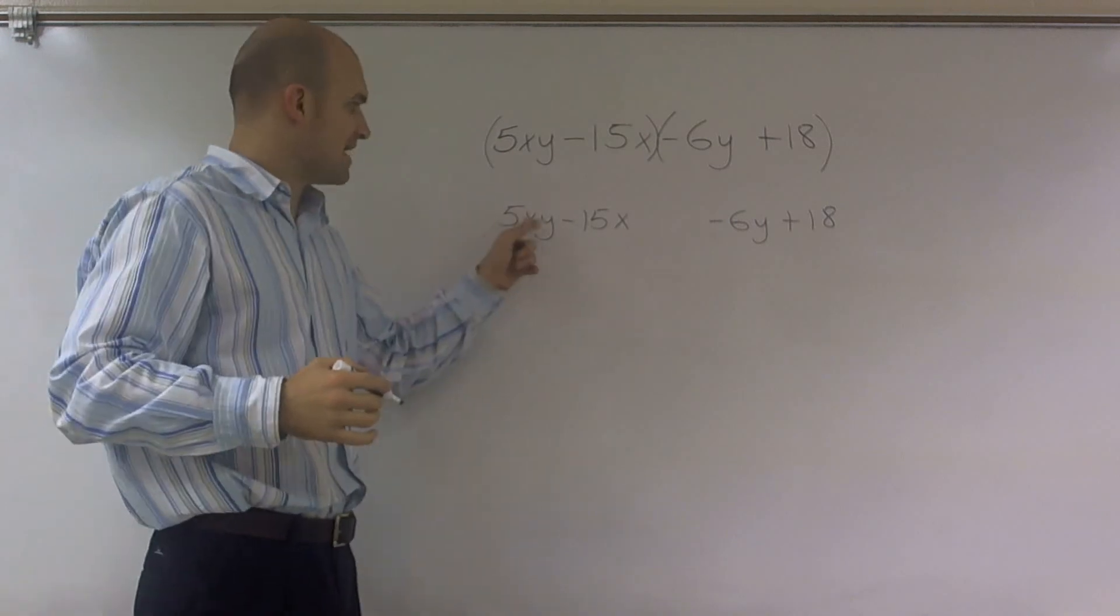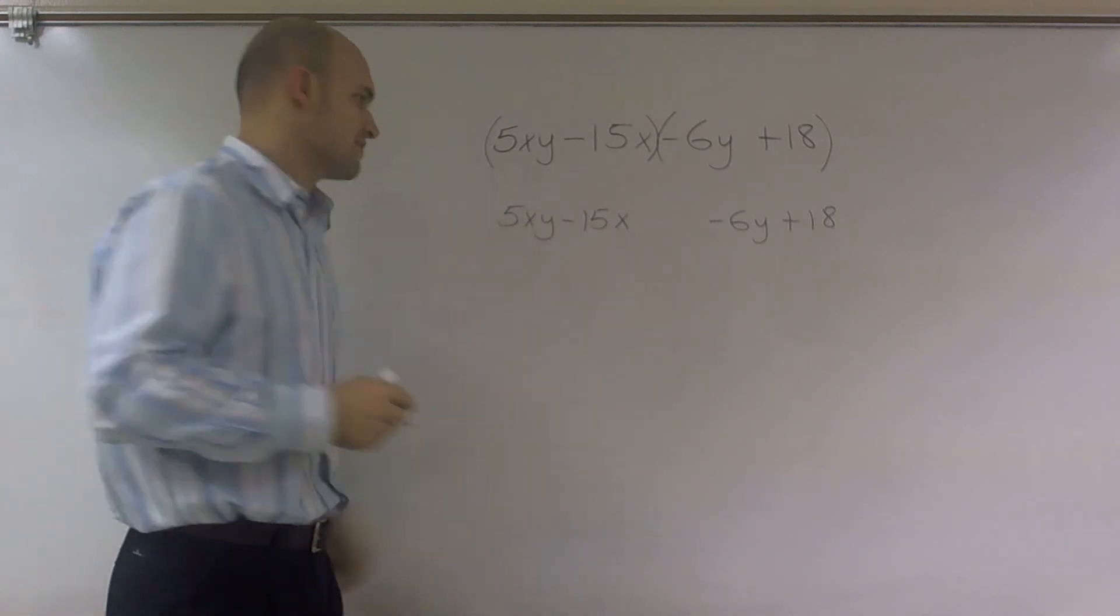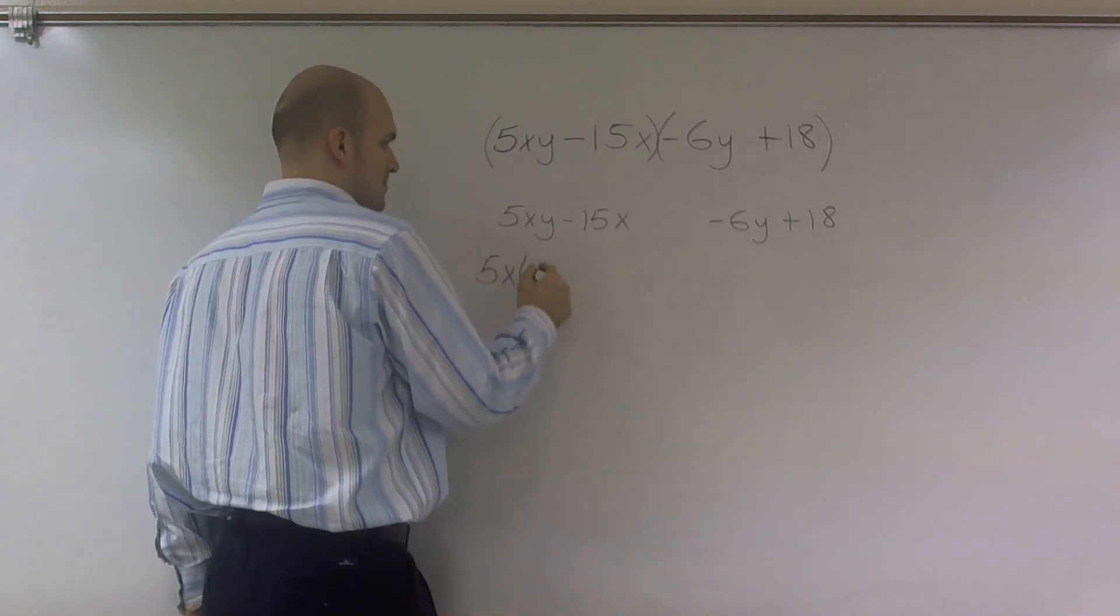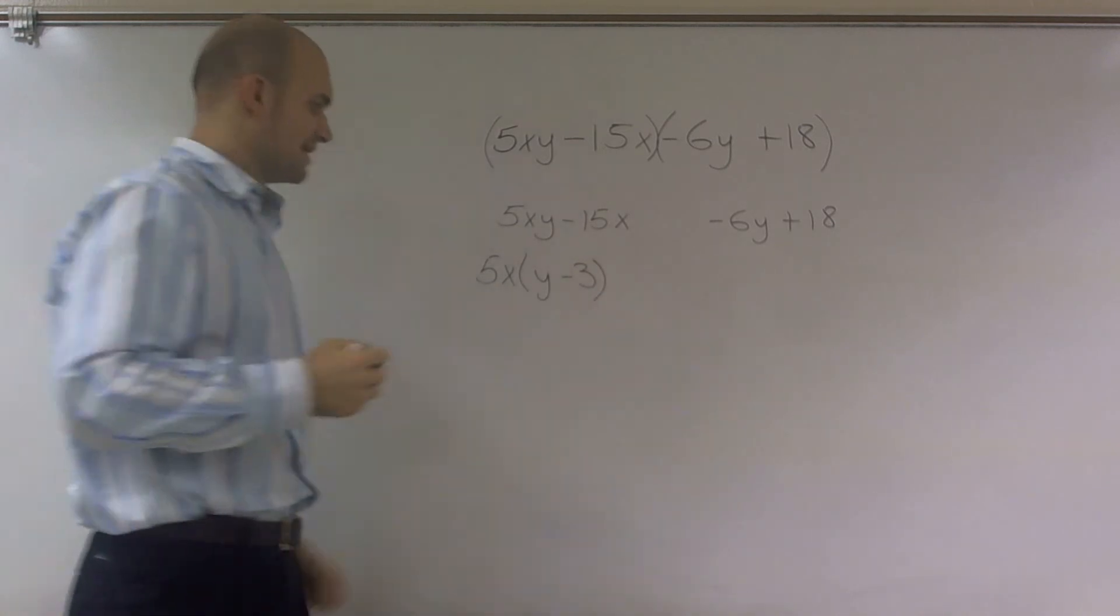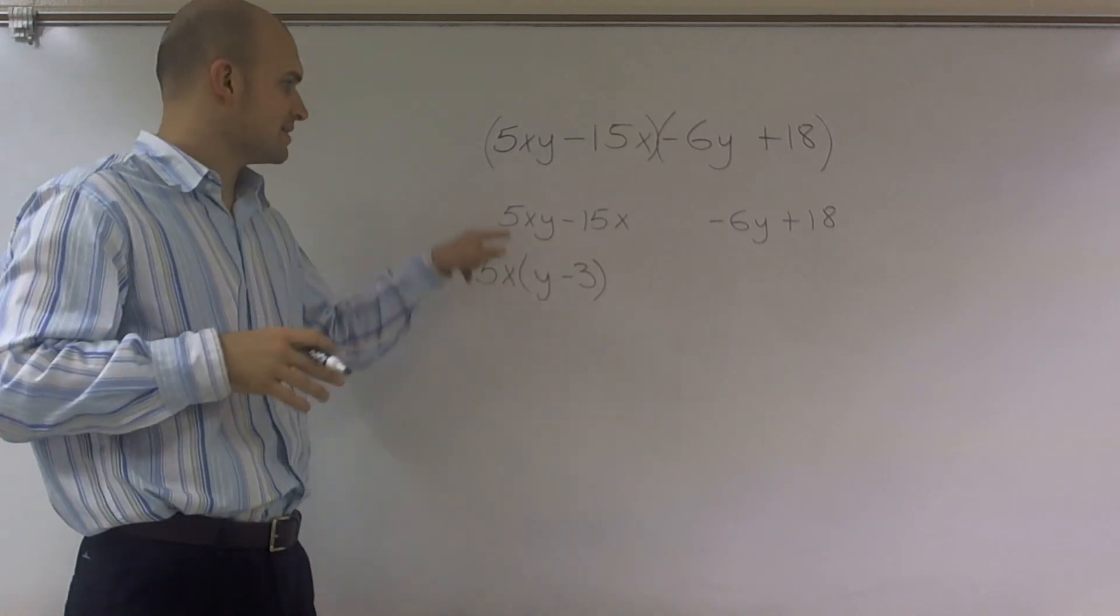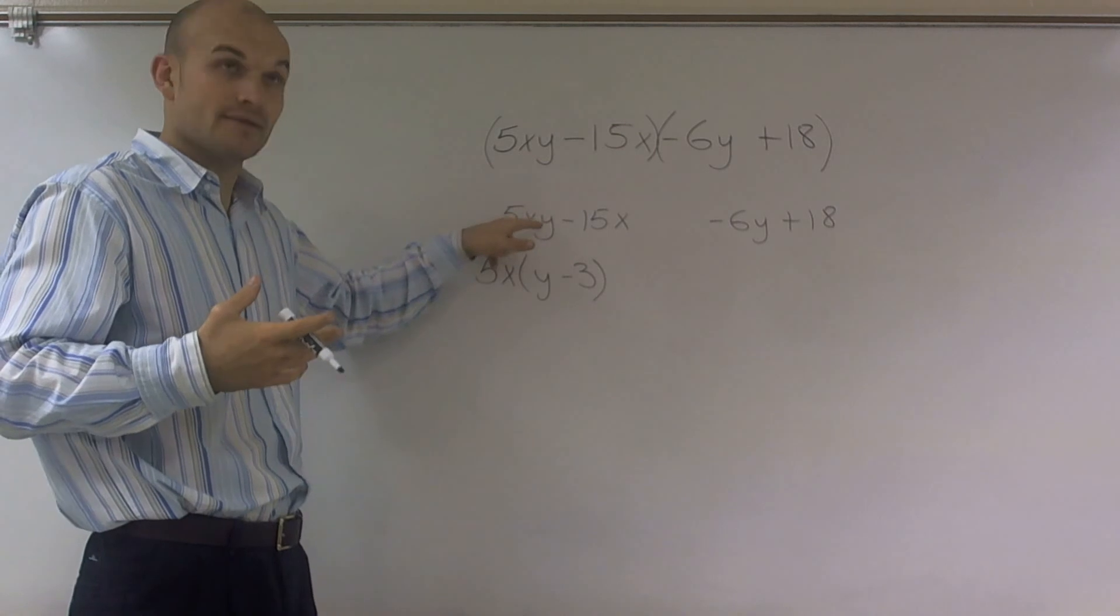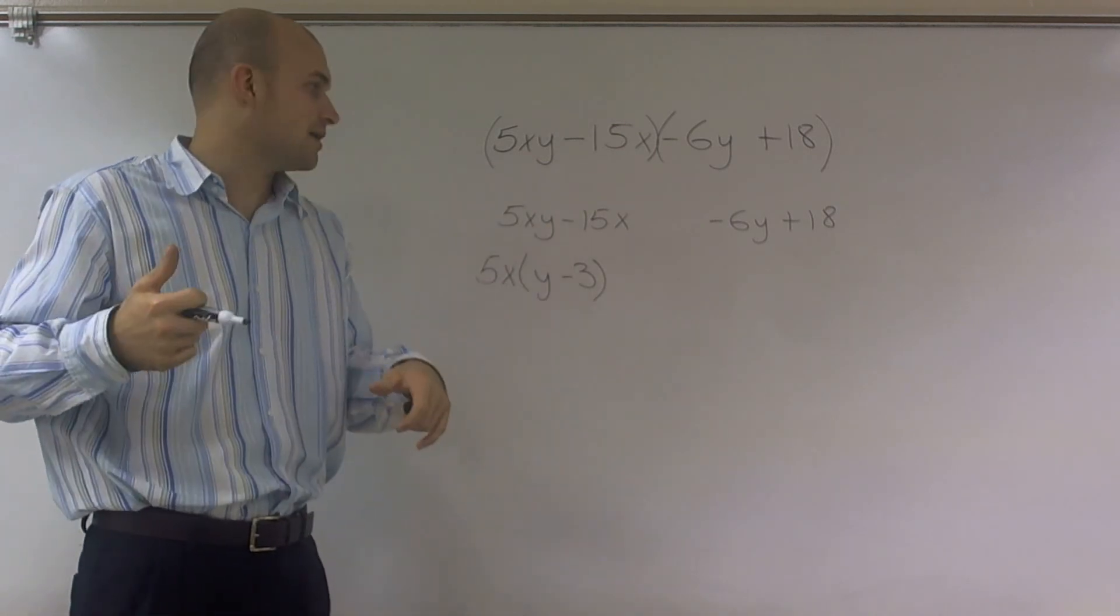And what you say is, well, out of 5xy minus 15x, they both share a 5 and they both share an x. So what I'm going to do is I'm going to factor out a 5x. And what you'll see is I obtain a 5x equals a y minus 3. And then double check your work. Does 5x times y give you 5xy? Yes. Does 5x times negative 3 give you negative 15x? Yes.